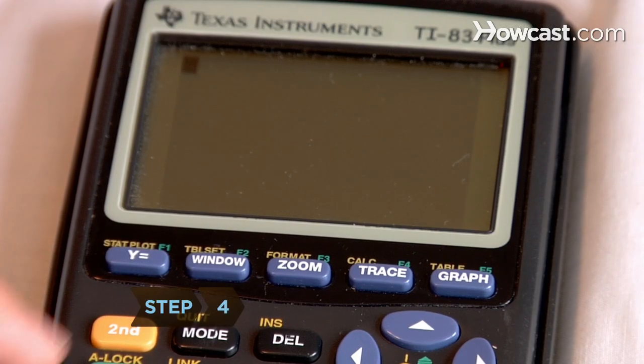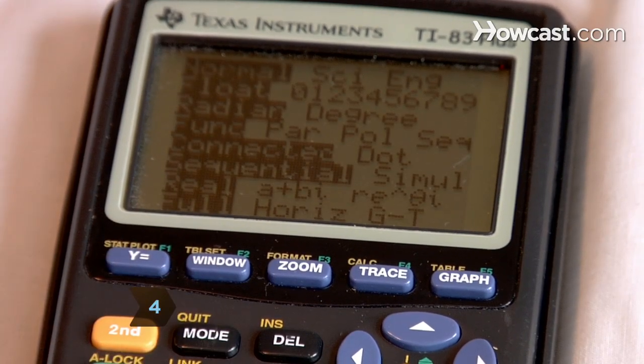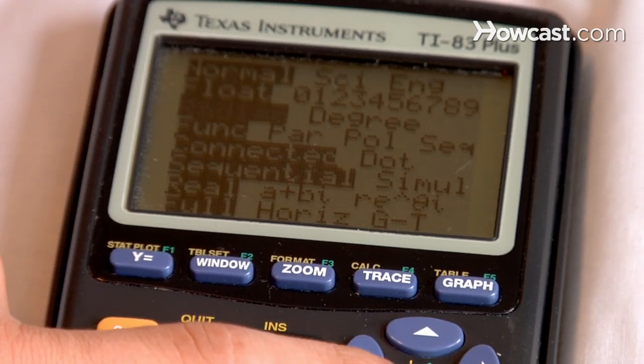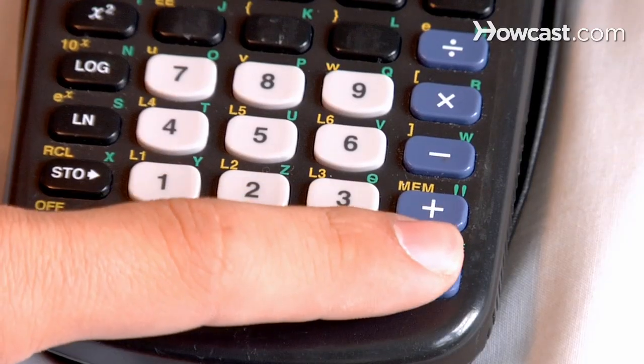Step 4: Access the calculator's menu by pressing the button labeled MODE, then move the cursor with the arrow keys, pressing ENTER to change settings.